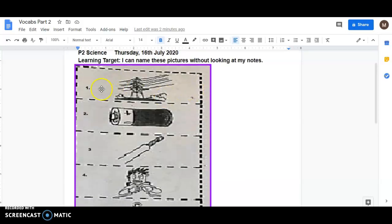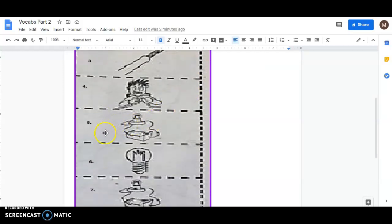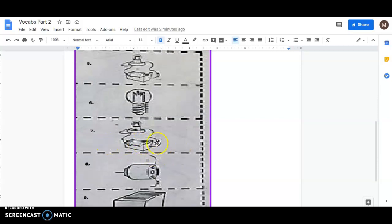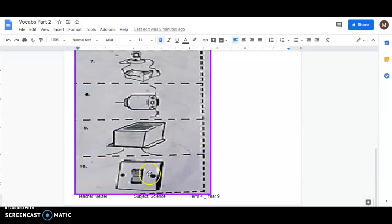So this is a picture of what? Number 2, number 3, number 4, what happened to him? Number 5, number 6, number 7, number 8, number 9, and number 10.